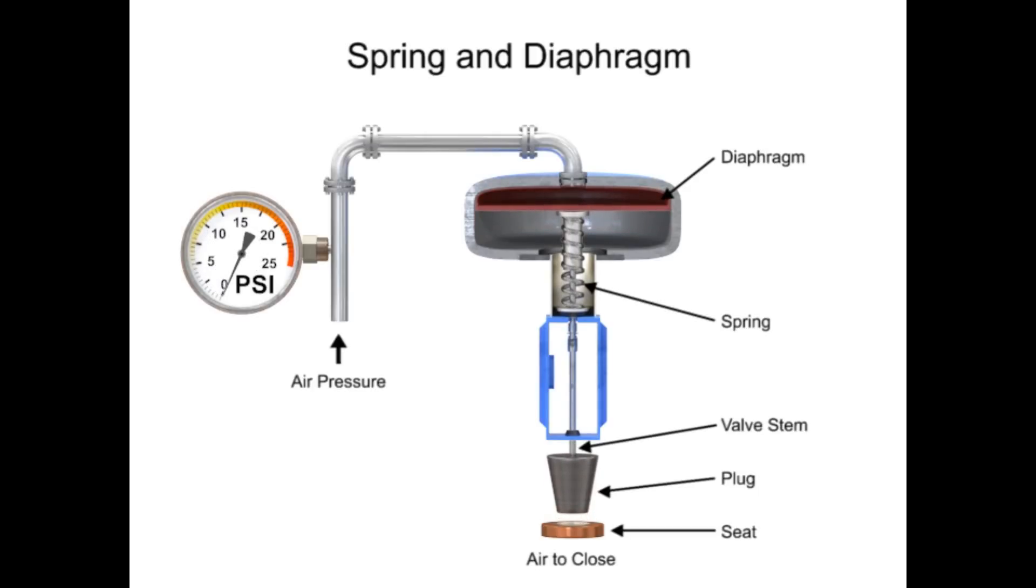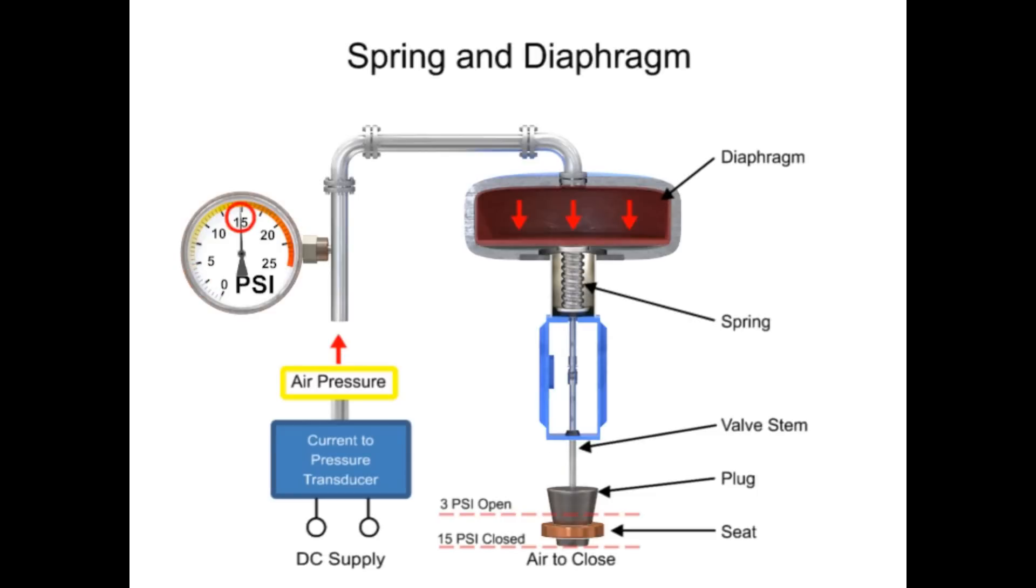To vary the position of the restrictor and flow through the valve, a current to pressure transducer can be used to provide a 3 to 15 psi signal to the diaphragm. At 3 psi the valve is maintained open and at 15 psi the valve is maintained closed. Pressures between the 3 to 15 psi range proportionally change the flow of the valve. For example, a pressure of 9 psi applied to the diaphragm moves the spring and valve stem to 50% of operating range.